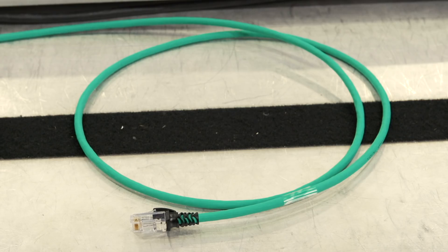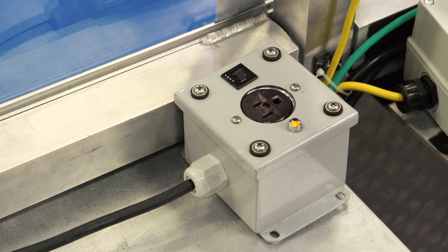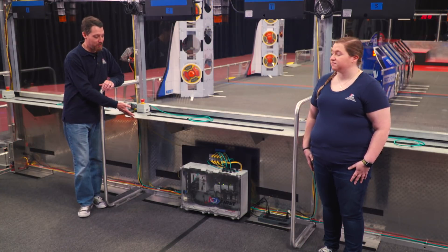Each player station has an Ethernet cable which connects the operator console's computer to the field management system. The e-stop button on the shelf lets you disable your robot if necessary. There's also an AC outlet for your operator console with a 2-amp fuse. If you find yourself in the middle player station, watch out for the equipment under the shelf.